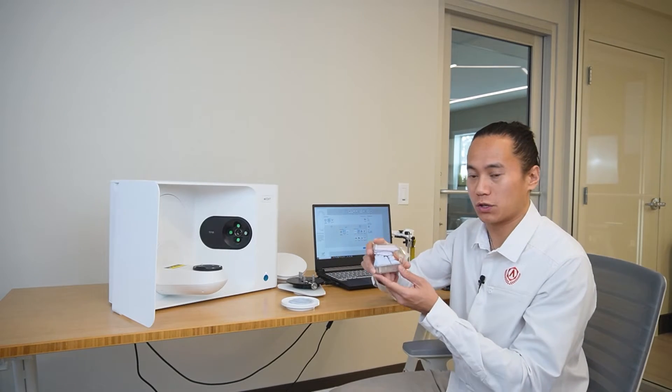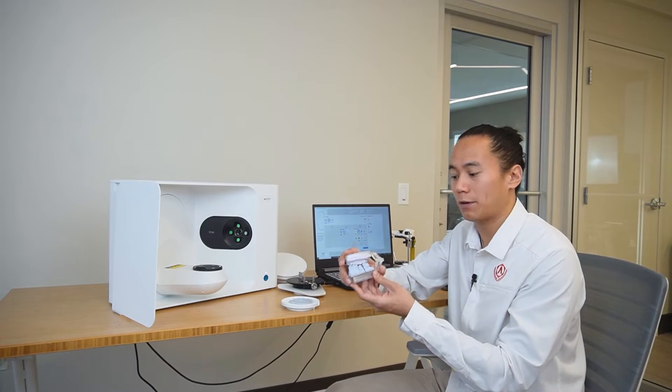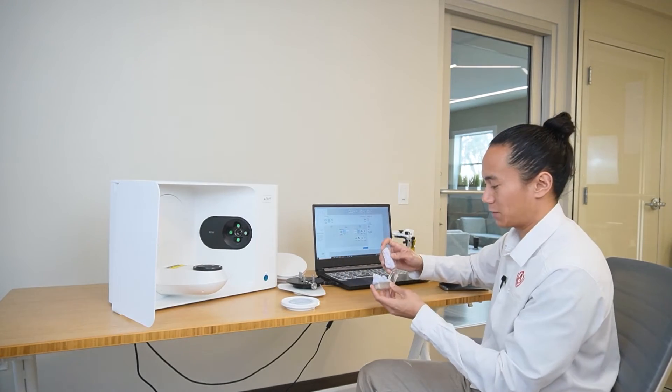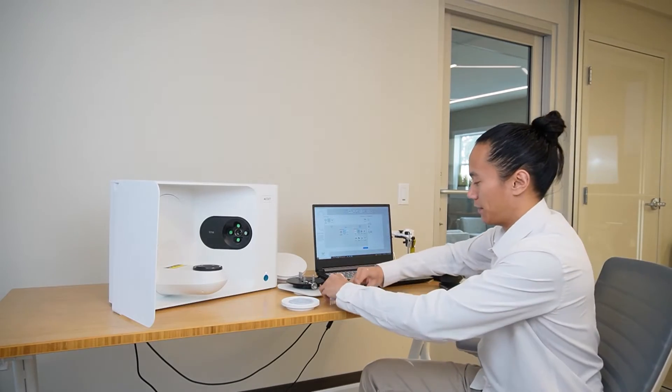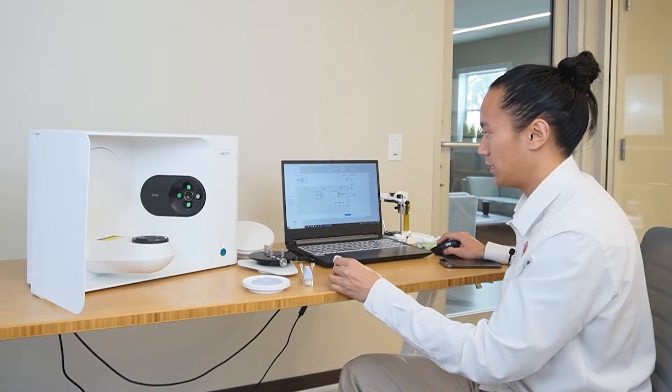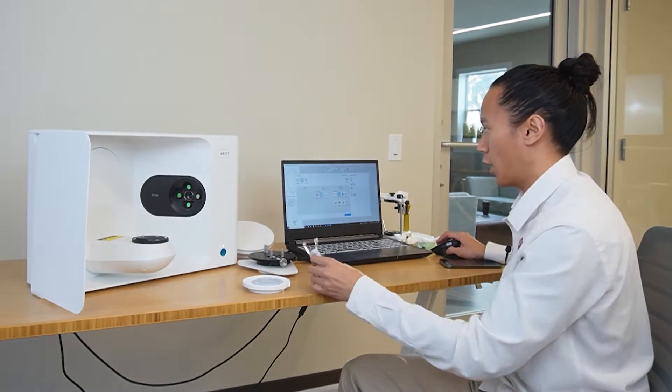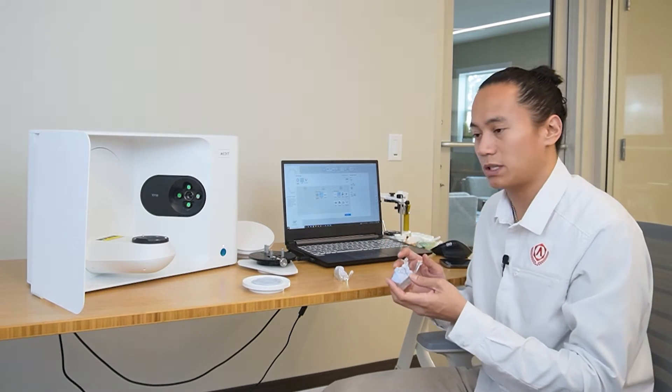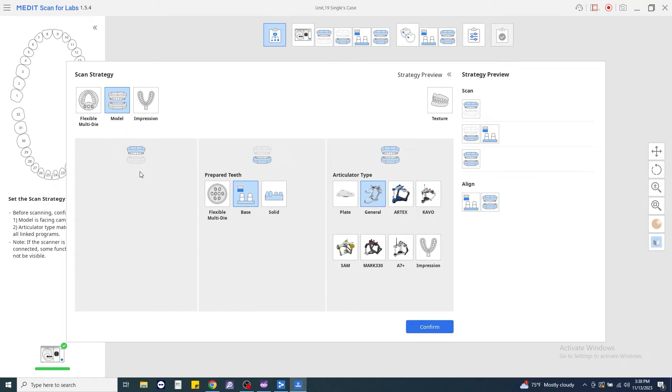So at this point, we're going to make sure that we take a look at the model that we have and make sure that we set up the strategy accordingly. The antagonist is pretty straightforward. So I'm going to go ahead and just separate my models. So we have our opposing scan. Now we're going to go to our prepared tooth. We have our base and we have our prep die. So this looks pretty good. We don't need to do the flexible multi-die right now. So I'm just going to leave it in as base with the removable die.